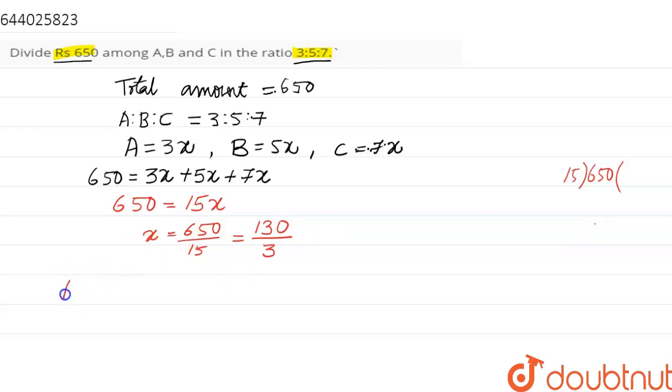Now the amount received by A will be 3 into x, which is nothing but 3 into 130 by 3. This is 130 rupees.